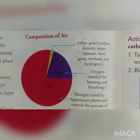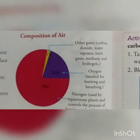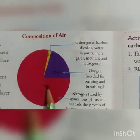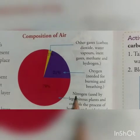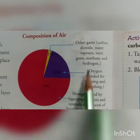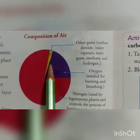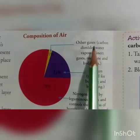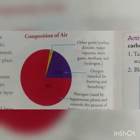Now let us discuss the composition of air. Air is made up of 78% nitrogen, 21% oxygen, and only 1% other gases such as carbon dioxide, water vapor, inert gases, and more.